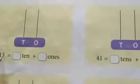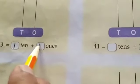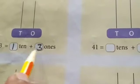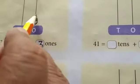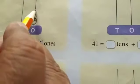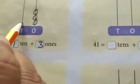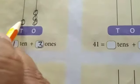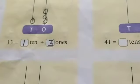Thirteen — one ten and three ones. Three ones plus one ten is equal to thirteen.